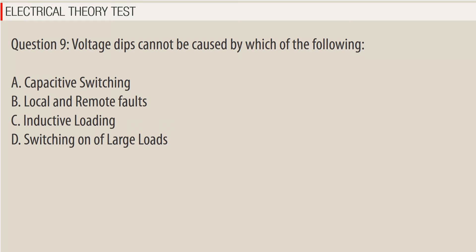Question 9: Voltage dips cannot be caused by which of the following? A. Capacitive switching. B. Local and remote faults. C. Inductive loading. D. Switching on of large loads.